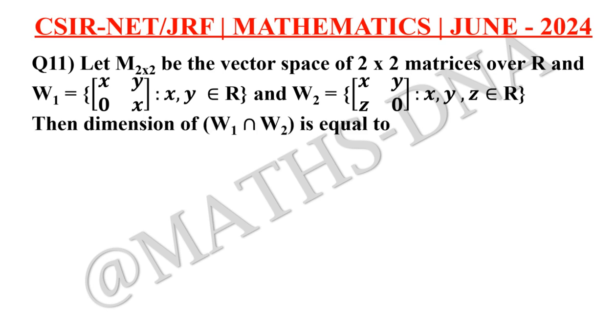Then the dimension of W1 intersection W2 is equal to, and the options are: A) 0, B) 1, C) 2, and D) 3.